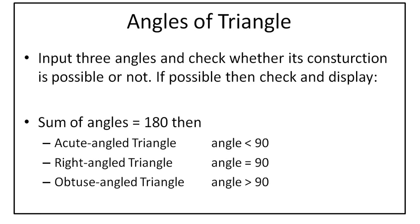If possible, then check and display whether it is an acute angle triangle, right angle triangle, or obtuse angle triangle. To check whether the construction is possible, you have to add all the angles together. Once you add, you should get 180 degrees. Once you get 180 degrees, then a triangle can be made, because if you know a straight line, the angle for that straight line will be 180 degrees. So if you fold it into three halves and attach the ends, you can make a triangle.